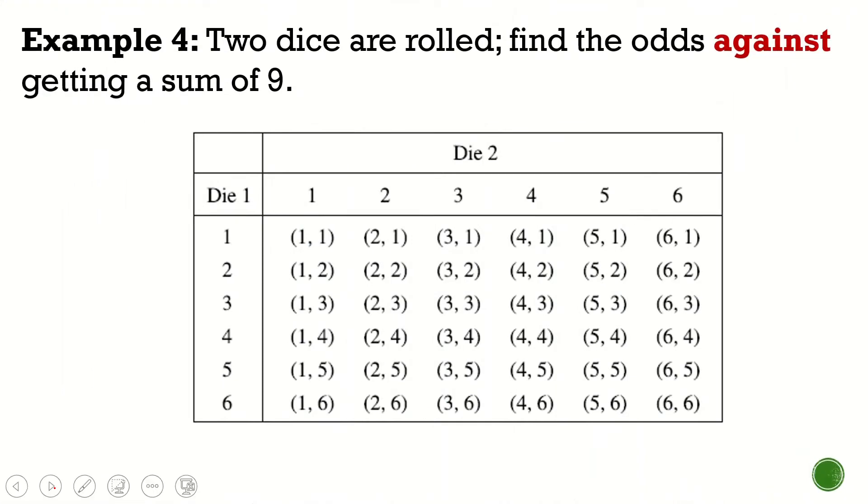Let's go to the fourth example. Two dice are rolled. Find the odds against getting a sum of 9. So these are the possibilities when we roll a die or we roll two dice. It can be 1,1, 2,2, 3,1, 4,1, et cetera. There's a total of 36 here. The 6 times 6 is 36, right? So it's total. Now here, the problem is against getting a sum of 9. So I think it's better if we find those numbers that are in favor of getting a 9. And because it's fewer, definitely. 6,3, 5,4.